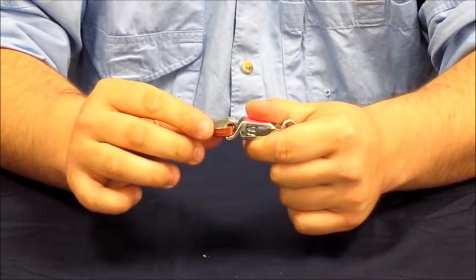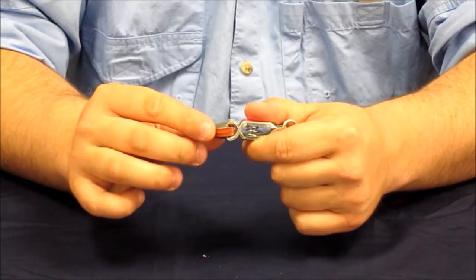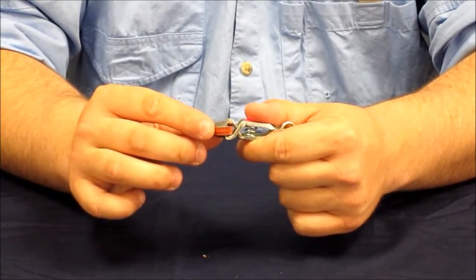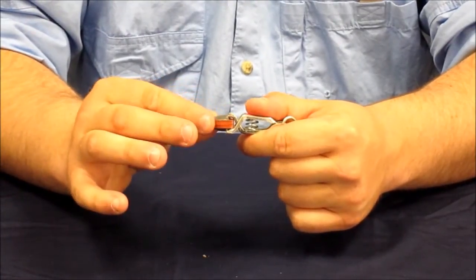The final piece is the pad itself and this just attaches to the monofilament line or if you're using a rubber band, you will attach the rubber band to the pad.